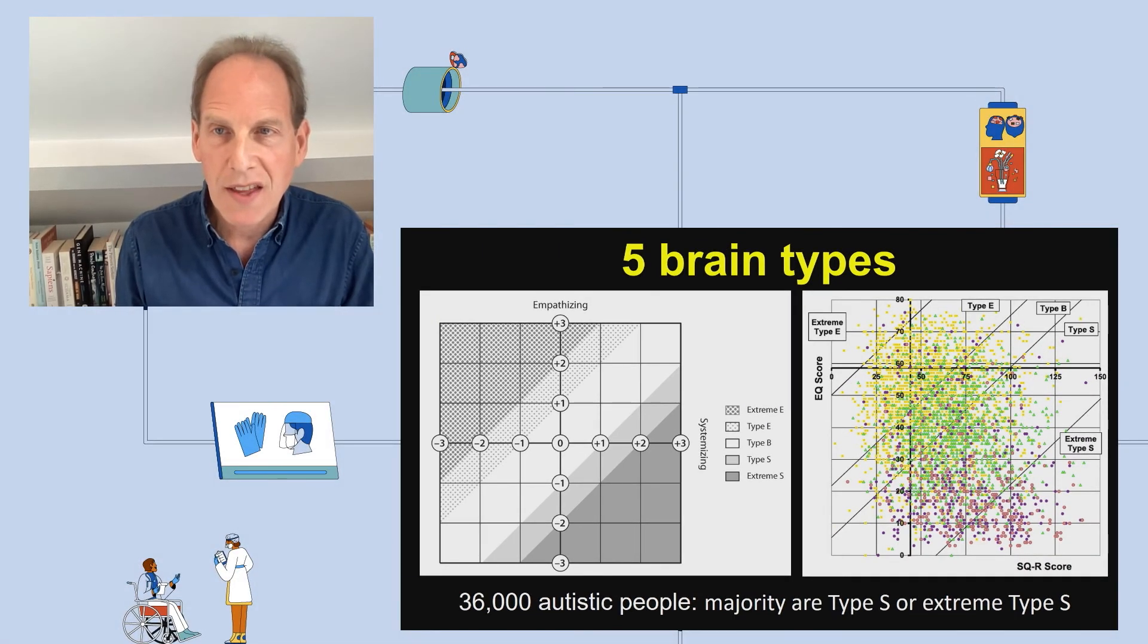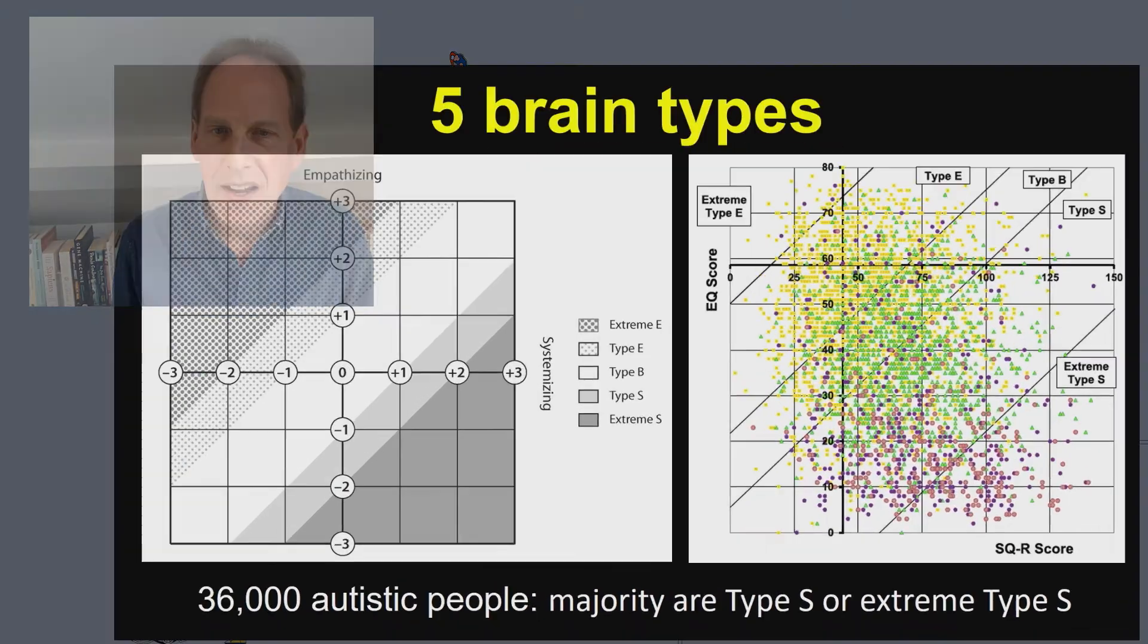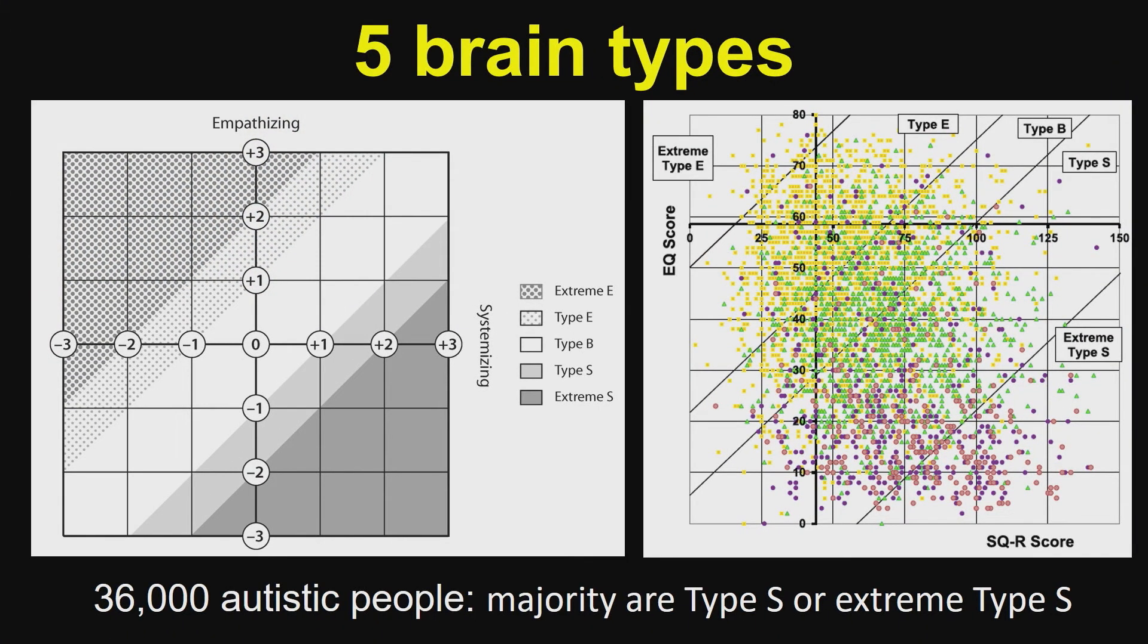What we found, you can see the data on the right, was that more women, shown in yellow, are type E. More men, shown in green, are type S. And then the majority of autistic people—we had 36,000 of them take part, shown in red and purple—are type S or extreme type S. So again, more evidence for a link between autism and hyper-systemizing.